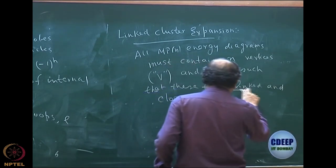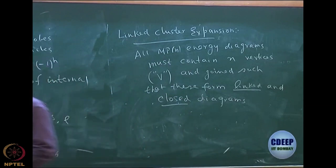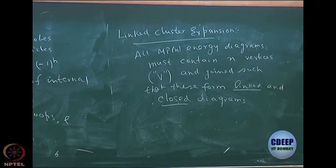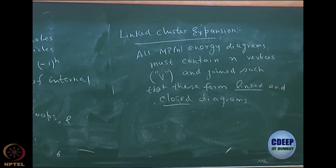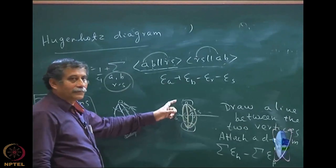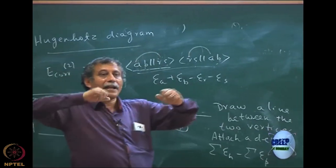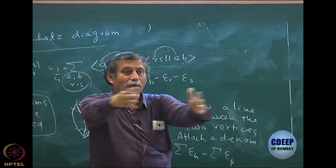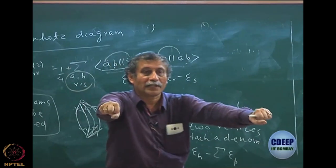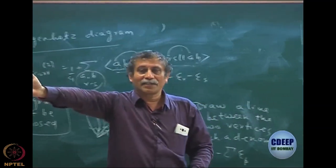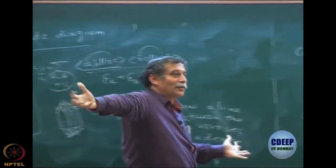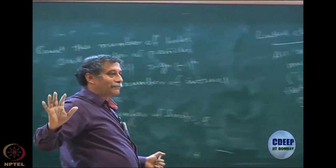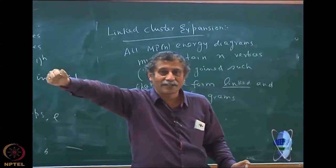It is important to understand these two terms: linked and closed. Closed means there should not be any line with hands not shaken. So if I have four people, there must be another four people to hold their hands. If somebody is an odd person out whose hands are not shaken, that is not a closed diagram — that is an open diagram.